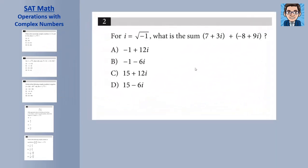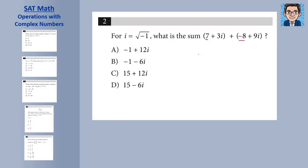Practice problem 2 — very similar. We combine like terms: 7 and negative 8 give negative 1; 3i and 9i give 12i. The answer is negative 1 plus 12i, which is choice A.